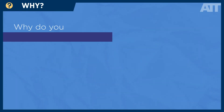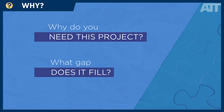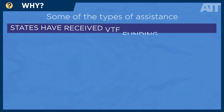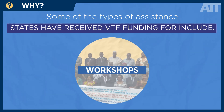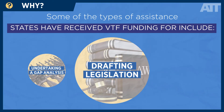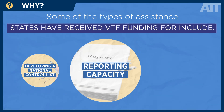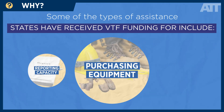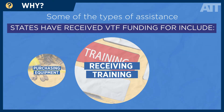Second, why: why do you need this project and what gap does it fill? Some of the types of assistance states have received VTF funding for include workshops, undertaking a gap analysis to determine where the national system is not consistent with treaty obligations or is deficient, drafting legislation, developing a national control list, enhancing reporting capacity or purchasing equipment, marking machines, ammunition destruction, and receiving training on the equipment.